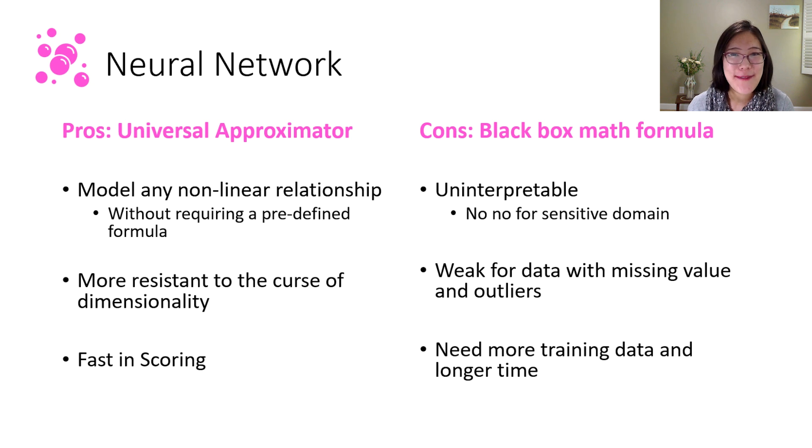However, nothing is perfect. The cons of neural network is that it is a black box. You cannot interpret it. So in some domains, for example, you need to explain to your customer why they get rejected for credit or not, you can't use neural network because it's a black box. It doesn't offer explainability. Because it's a math formula, you also need to impute missing values. So if your data has a lot of missing values, maybe this is not the right approach.